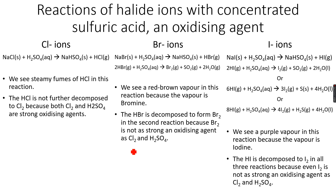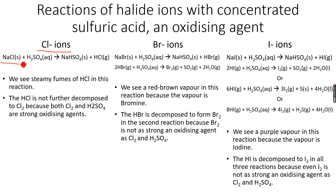Now let's look at the reactions of halide ions with concentrated sulfuric acid, which is a very powerful oxidizing agent. When we add concentrated H₂SO₄ to NaCl — not just a solution but even to a solid with chloride ions — we get NaHSO₄ and HCl. HCl is in the gaseous state, so we see steamy fumes, which tell us that HCl is being liberated.